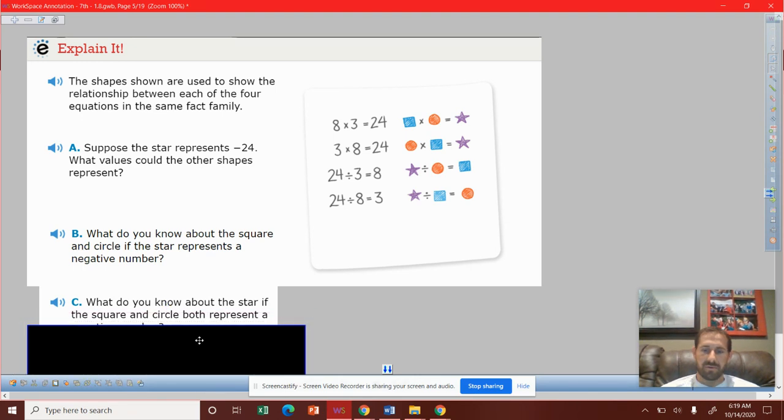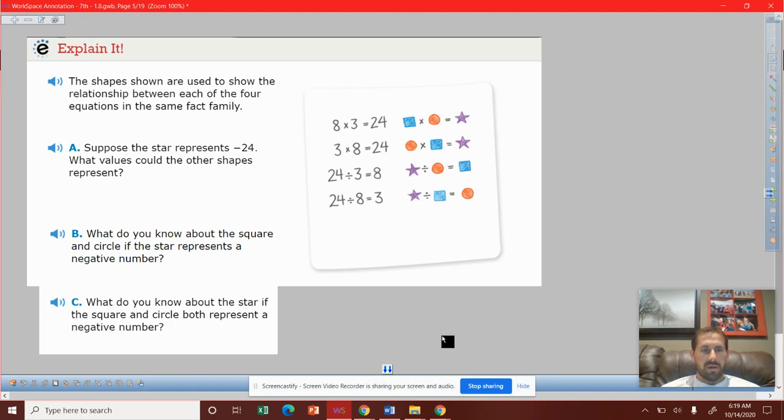Last one, C. What do you know about the star if the square and circle both represent a negative number? A negative times a negative is a positive.